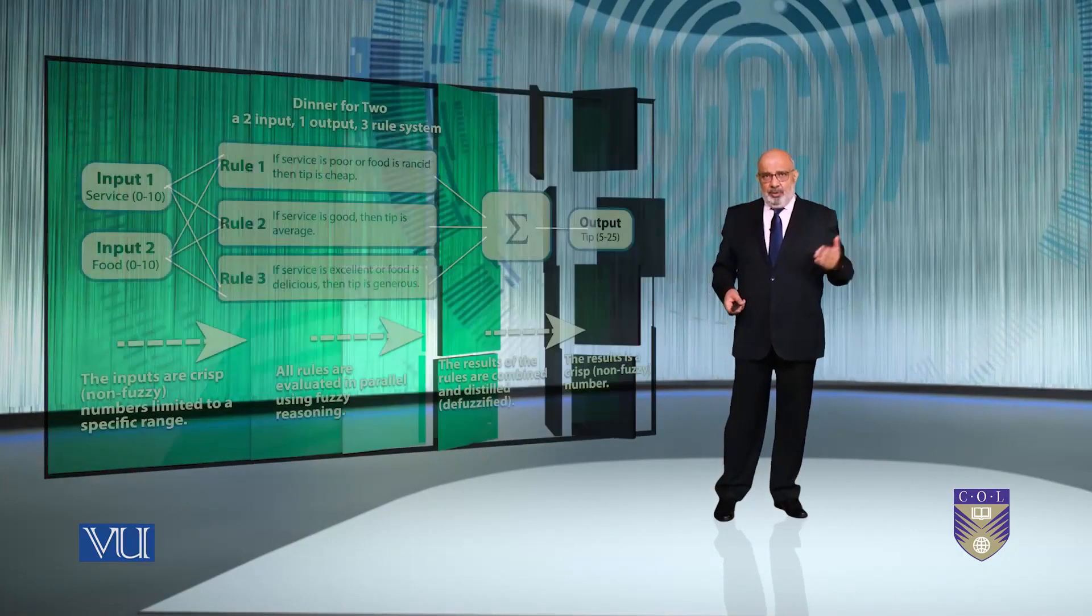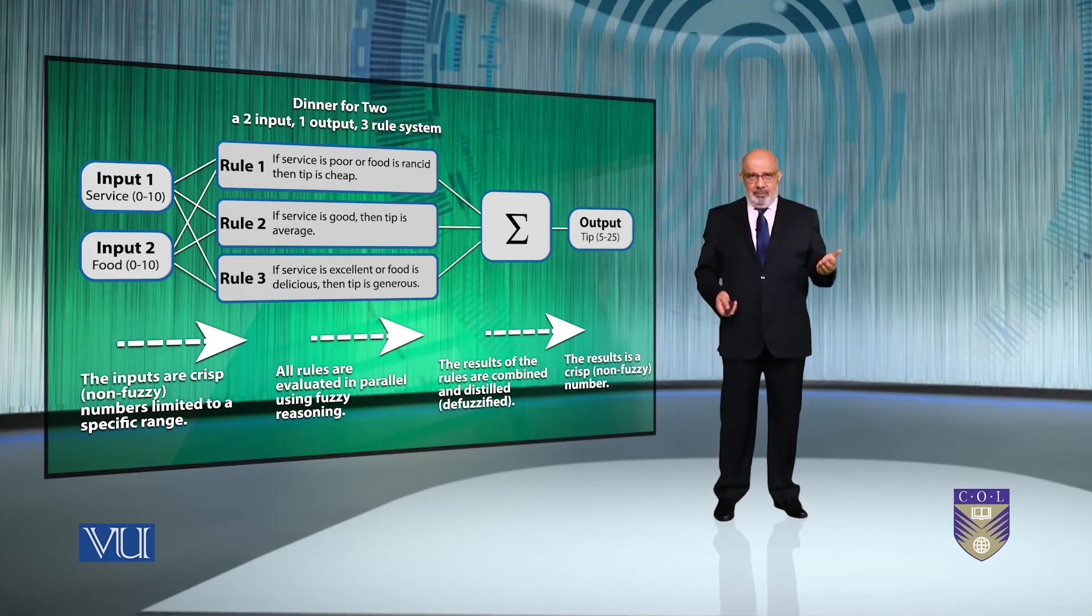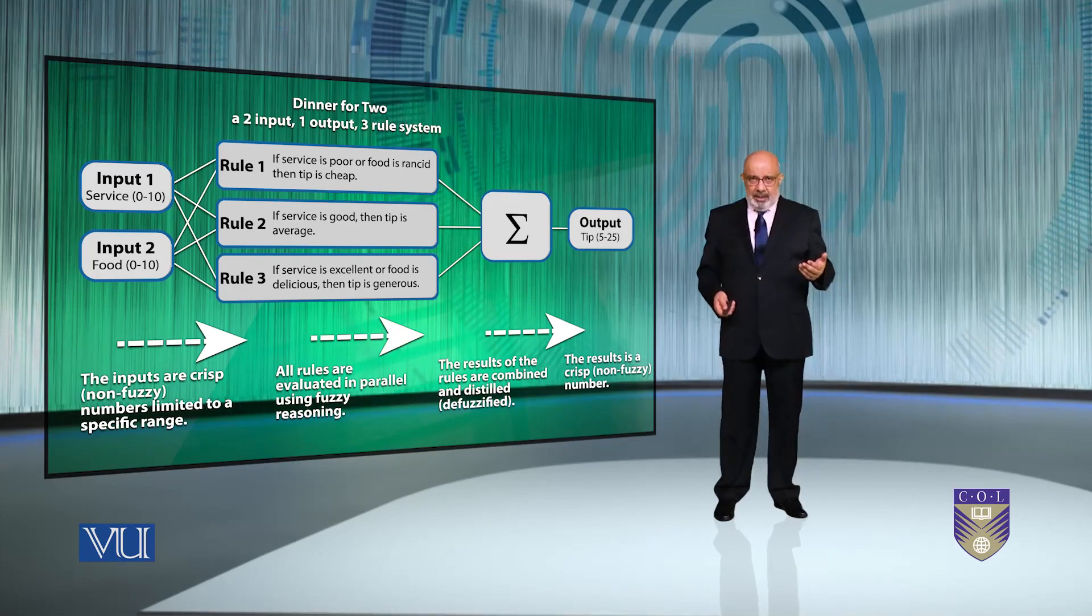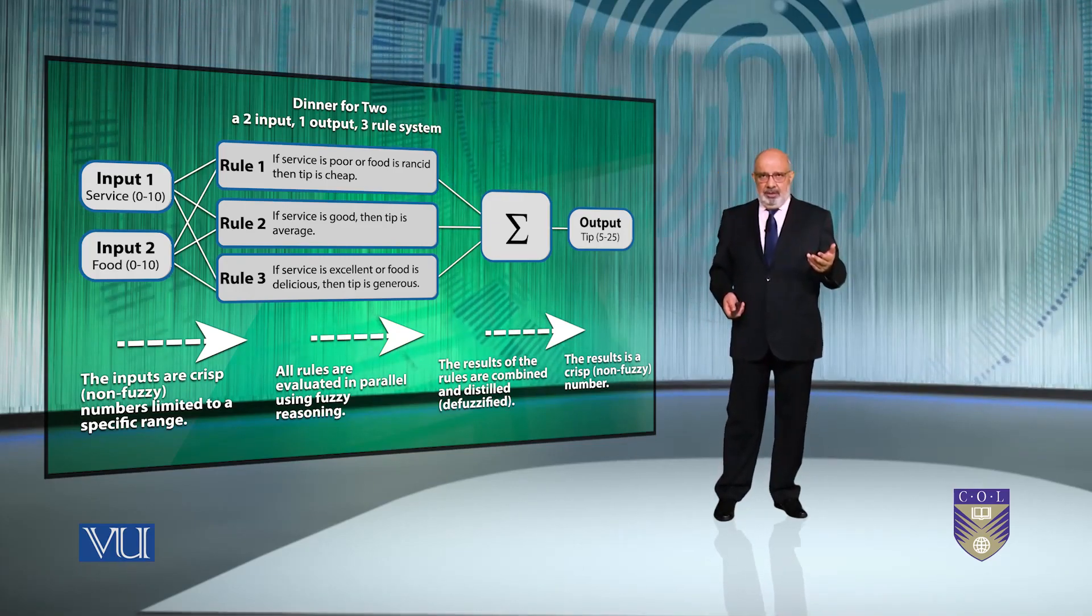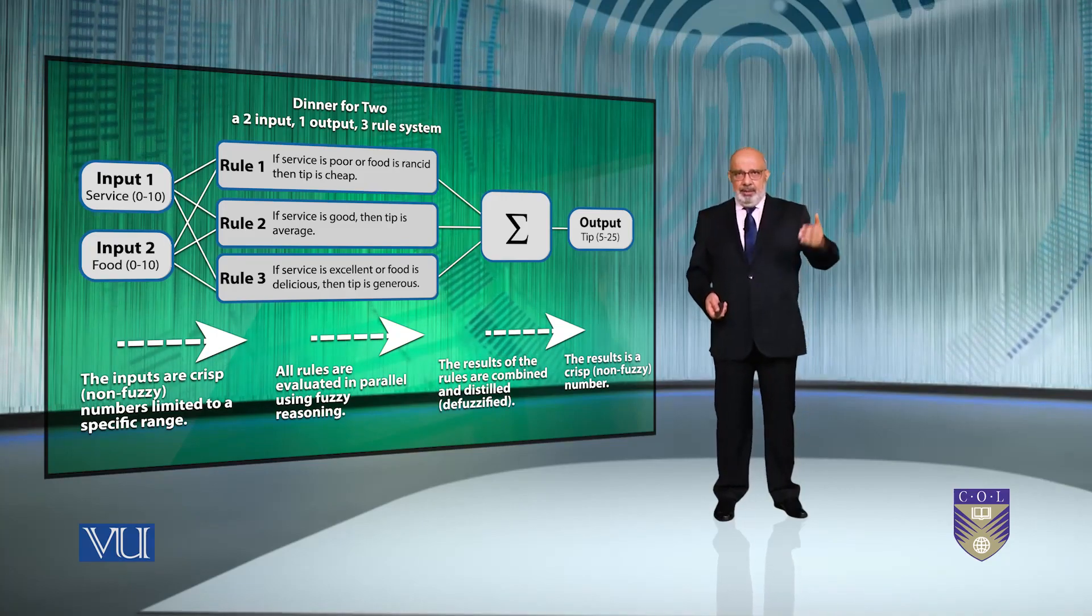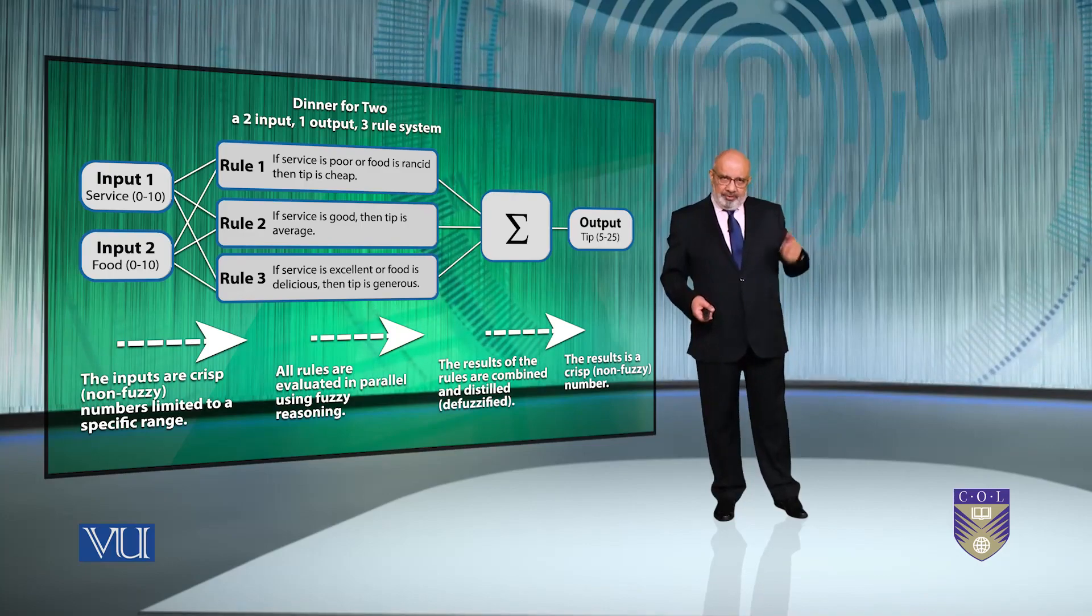The system is based on three fuzzy rules. We will discuss each one of them, rule one, rule two, and rule three. And then we will apply these three rules using the inference process. So what's the first step? First step is the fuzzification.